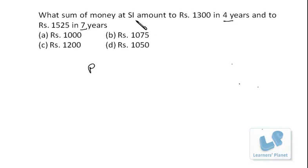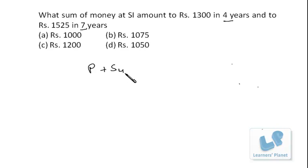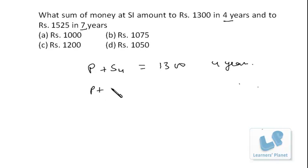In the first case, the amount becomes 1300 in four years. Amount equals principle plus simple interest. So: principle plus simple interest for four years equals rupees 1300, and principle plus simple interest for seven years equals 1525.